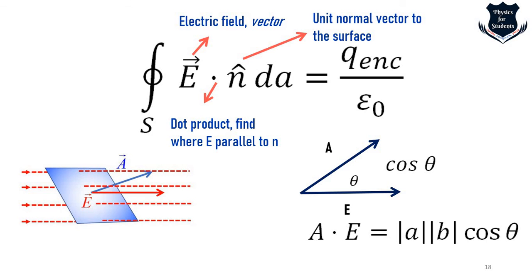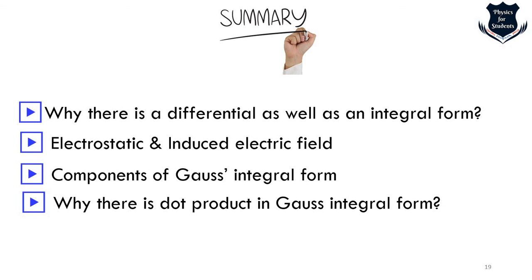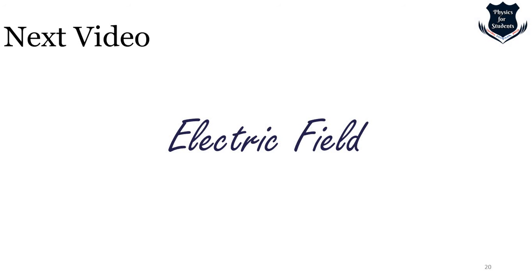To summarize this video: we covered why Maxwell's equations have both differential and integral forms, what electrostatic and induced electric fields are, the individual components of Gauss's integral form, and most importantly, why a dot product is used in Gauss's integral form. In the next video, we will cover what an electric field is. Please leave comments, subscribe, and like the video. Thank you for watching — stay safe and have a nice day.